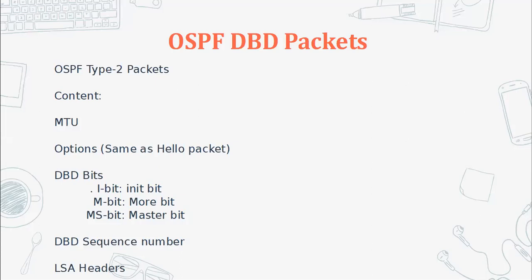In this section, we will discuss OSPF Database Description packets, which are the Type 2 OSPF packets. In our previous section, we discussed the OSPF Type 1 packet — the hello packet. The content of the DBD packets includes the MTU, so the Maximum Transmission Unit information travels along with the database description packets.